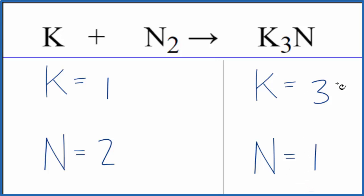Probably the best thing to do when you get an odd number like this is to change it to an even number. And we can do that by putting a coefficient of two in front of the K3N.